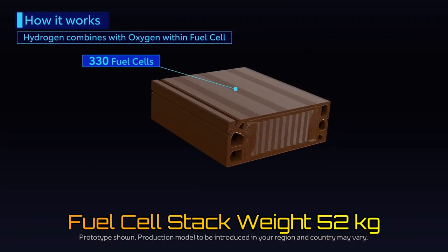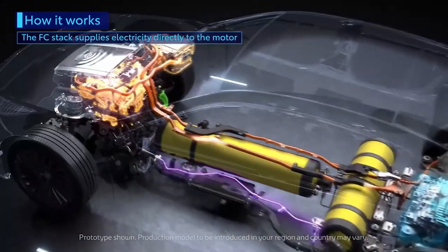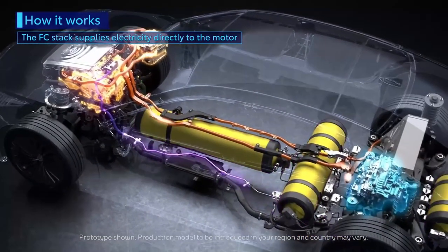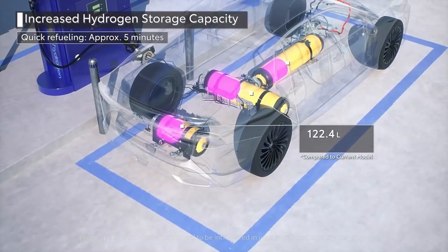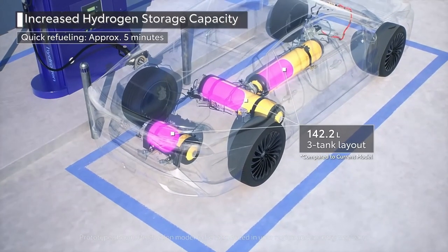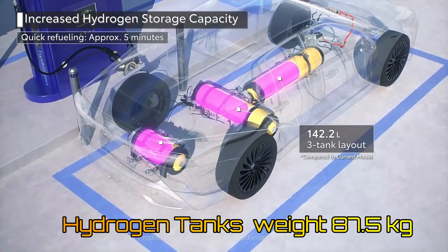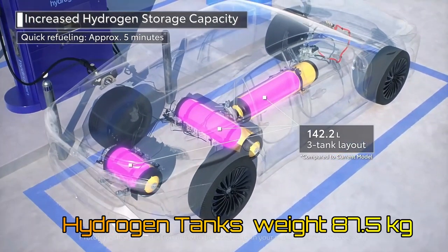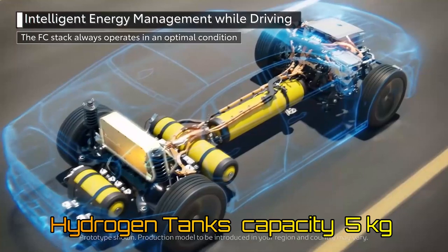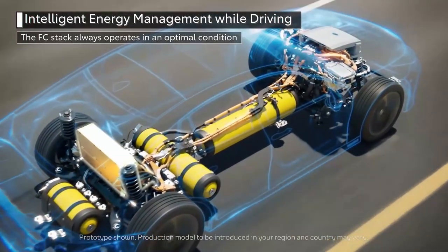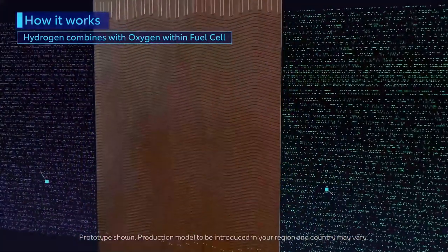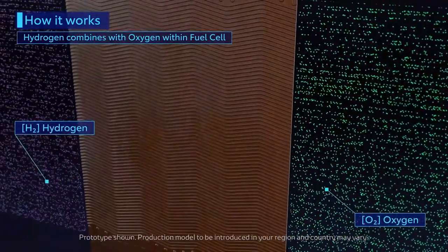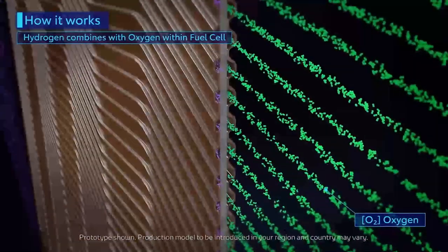The fuel cell stack weighs about 52 kilograms. The combined space that the two hydrogen tanks occupy is 122 liters. They can store hydrogen at 70 megapascals. The tanks have a combined weight of 87.5 kilograms and can hold 5 kilograms of hydrogen in total. This fuel cell can provide power of up to 136 kilowatts and needs a battery as a buffer, which is already present in the Blackfly.